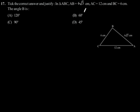In triangle ABC, AB is equal to 6 root 3 cm, AC is equal to 12 cm, and BC is equal to 6 cm. The angle B is: